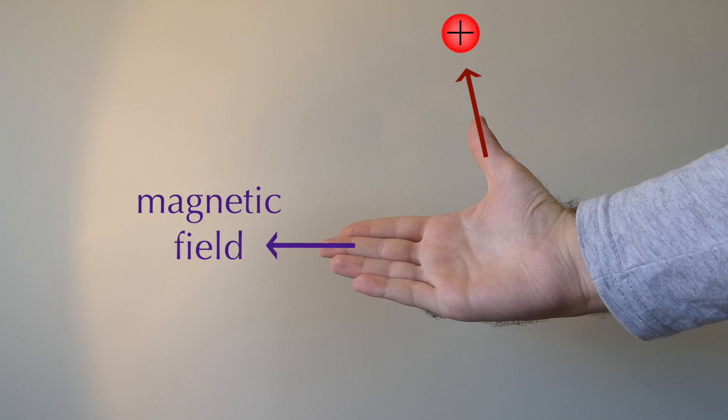Your fingers represent the lines of a magnetic field. Where is the force then? It sticks straight out from your palm, the same direction as the force of a slap.